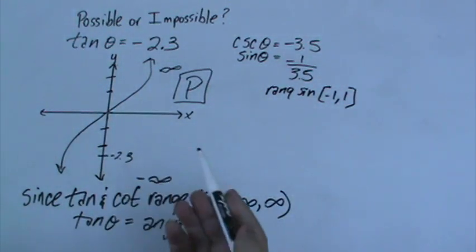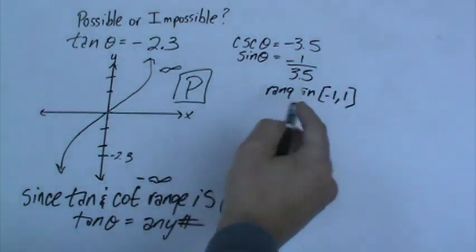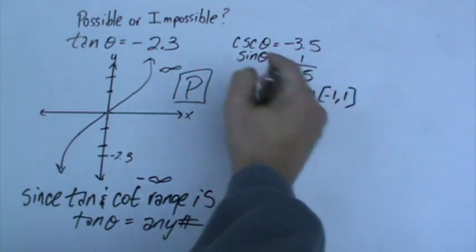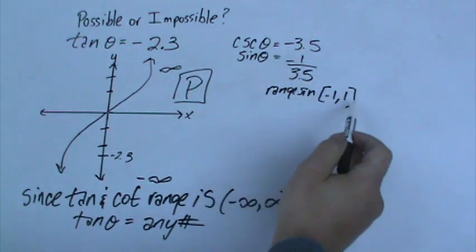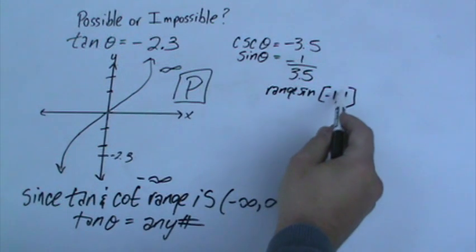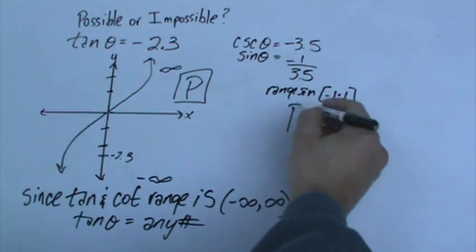It's negative 1 and 1. So this one we don't even really have to draw the graph now. Is sine in the range of negative 1 and 1? It is, because it falls somewhere in between here. So we're going to say this one is possible.